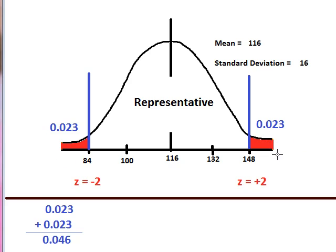That is, about 4.6 percent of the time we might randomly select someone who is not representative. Thus the probability of not being representative, as we've defined it here, is 0.046.